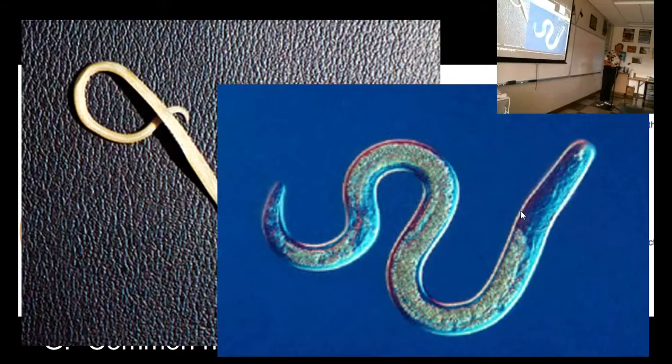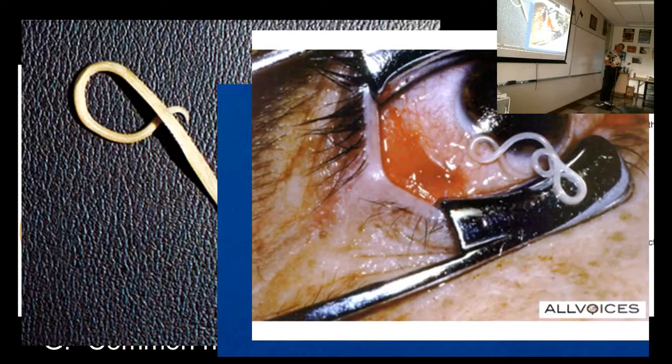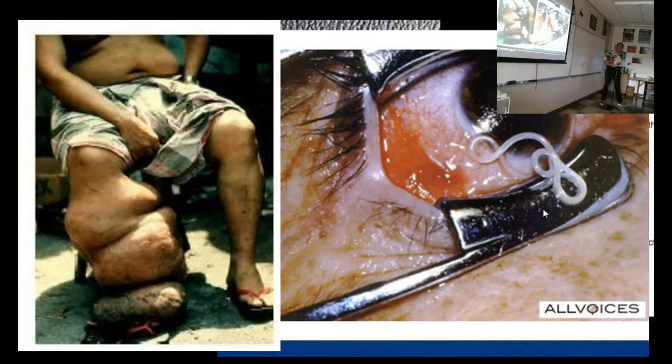That's another Ascaris worm. Here's one — this is a different species, but this is a roundworm that parasitizes somebody's eyeball. They saw the worm and made a small cut to pull it out. This is elephantiasis — a disease caused by a worm that clogs the lymphatic system that drains excess fluids from parts of your body.